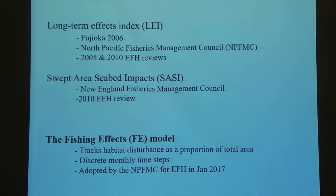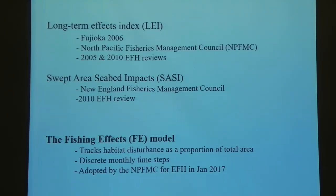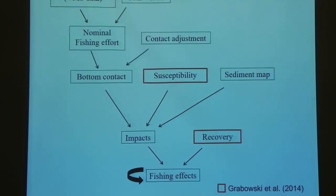We wanted to add to the acronym soup, so we came up with the FE model, or the Fishing Effects model. Two characteristics in particular to think about as we go forward: number one, we track habitat disturbance as a proportion of total area, and we move through the model in discrete monthly time steps — basically an output of how much habitat is disturbed every month. This was adopted by the North Pacific Fisheries Management Council in December of 2016.